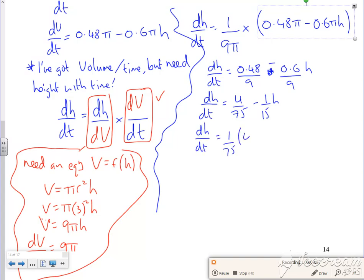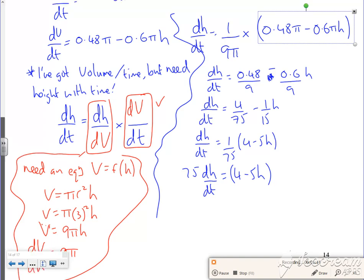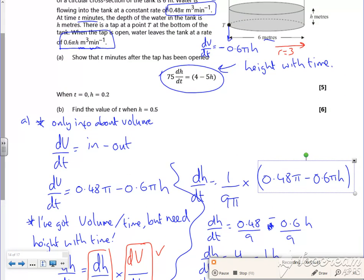So I've got like a 1 over 75, 4 minus 5H now, and then I wanted 75 lots of dH by dT is 4 minus 5H. So that's okay, isn't it? That's not too bad. So that's the first bit done in whatever time it was, there to show that.